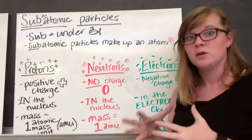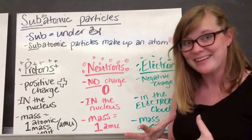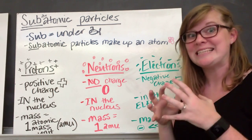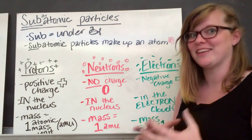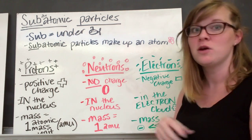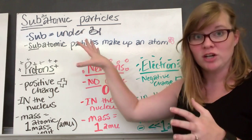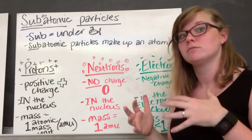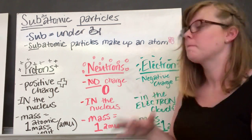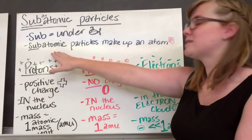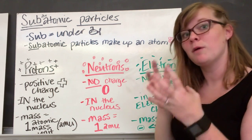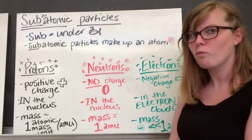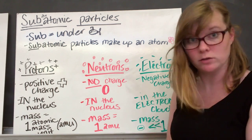Here's where we start getting more complex. Atoms have an electron cloud and a nucleus, and inside those are subatomic particles. "Sub" means under — think submarine: sub, under, underwater. So subatomic particles are the smaller bits that make up an atom. We have three major subatomic particles: protons, neutrons, and electrons.